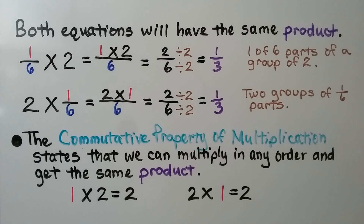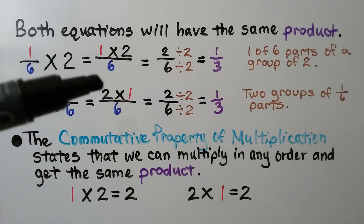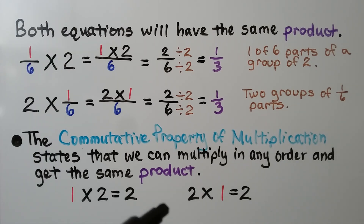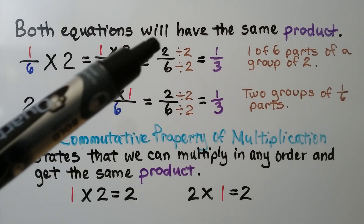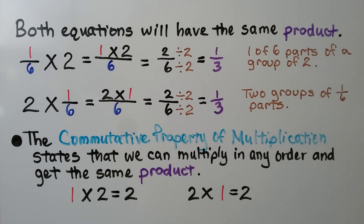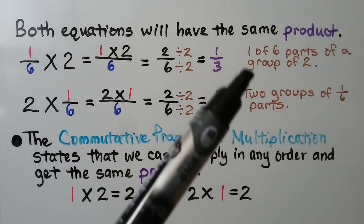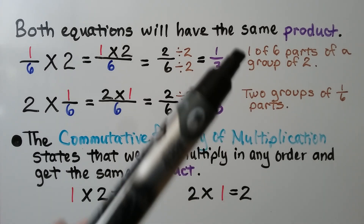The commutative property of multiplication states that we can multiply in any order and get the same product. So whether we're multiplying 1 times 2 or 2 times 1, we're still going to get the same product — 2 — for our numerator. So they both have the same product, but they represent different things.